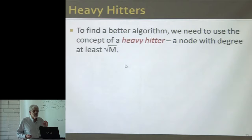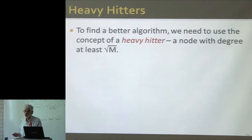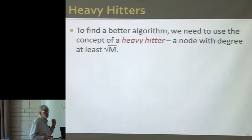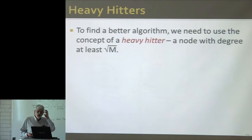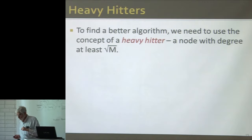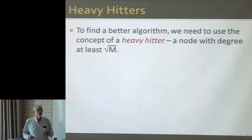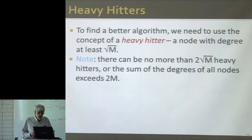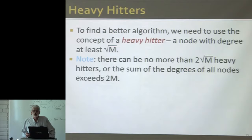The key to all of these optimal join algorithms is making a distinction between heavy hitter values and those that are not. In this situation, a heavy hitter is a node whose degree — that is the number of edges coming in — is at least the square root of the number of edges. The key observation is: if I've defined heavy hitter that way, there can't be more than 2√m heavy hitters.